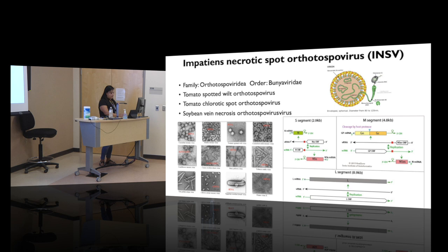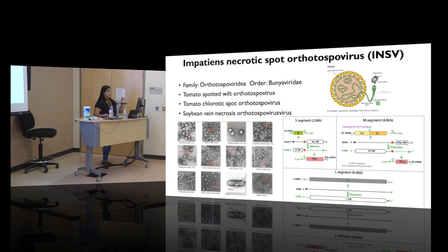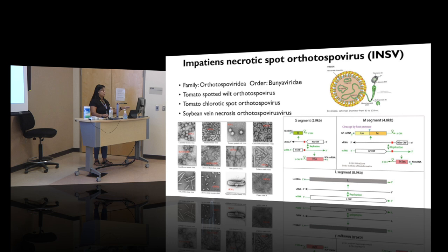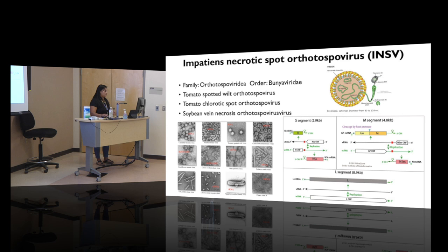This is what the INSV virus particle looks like — a graphical representation. There is the membrane, the polymerase that helps in replication, and three genetic segments: large, medium, and small. We cannot see viruses with the naked eye or even a standard microscope — only with an electron microscope. Within the virion are those three segments measured in kilobases. Some viruses have only one segment with just a few proteins: one for getting inside the cell, one for replication, and one for acquiring the membrane and exiting the cell. It is an extremely efficient system.